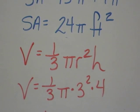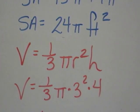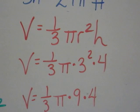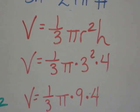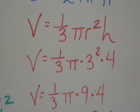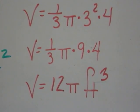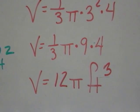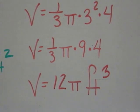So the volume is 1 third pi times 3 squared times 4. 3 squared is 9. 1 third of 9 is 3 times 4 is 12. So the volume is 12 pi feet cubed. This time the label is cubed because it's volume. And you're done.